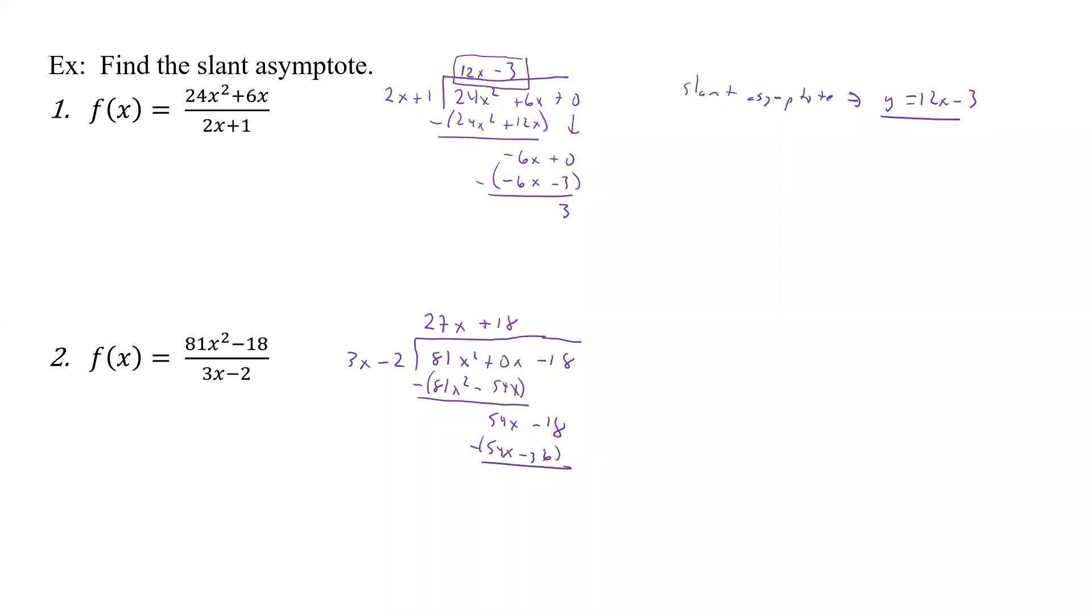Subtract all that off, that's going to give us plus 18. Again we don't care about the remainder, all we worry about is what the quotient is. And so our slant asymptote is y equals 27x plus 18.